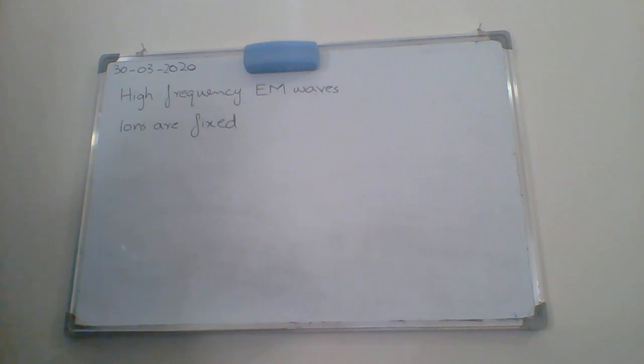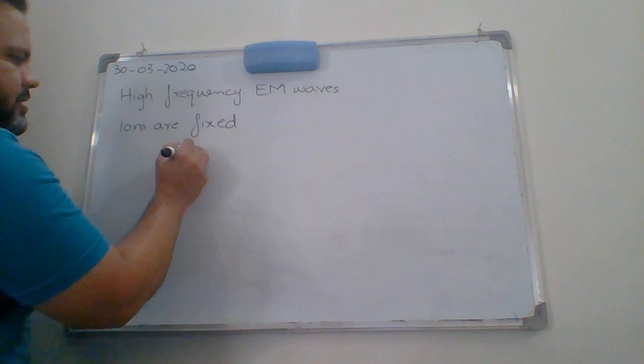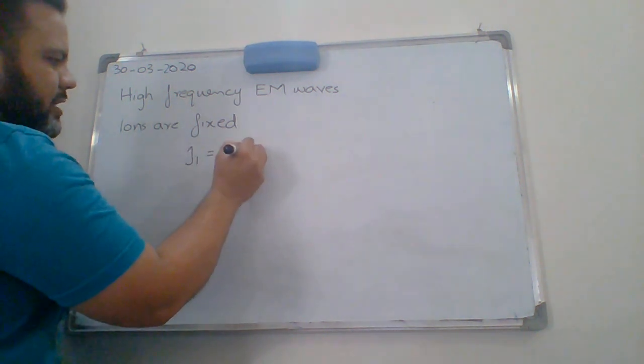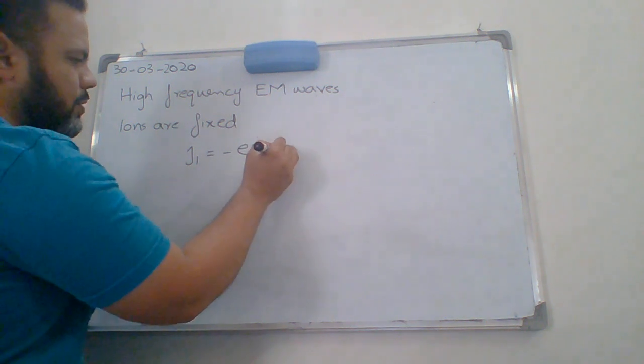By taking range of reaction, we can calculate the current J1 which is coming entirely from the introduction of electrons. So J1 is written as minus E n naught V1.